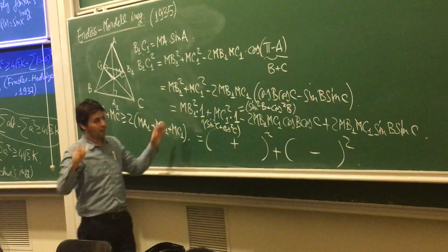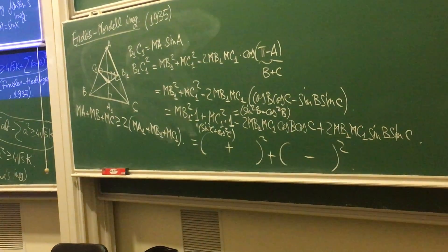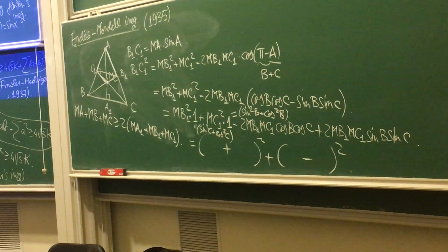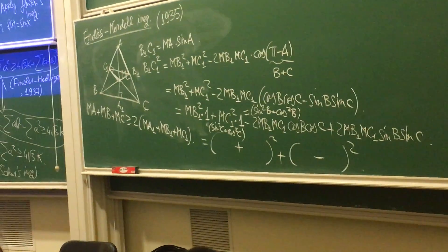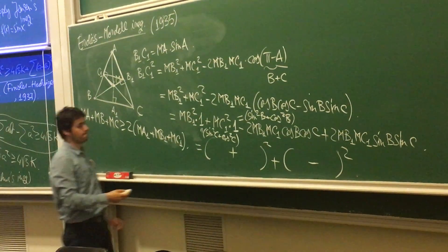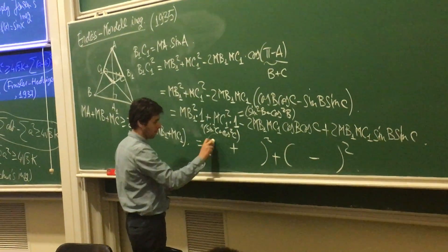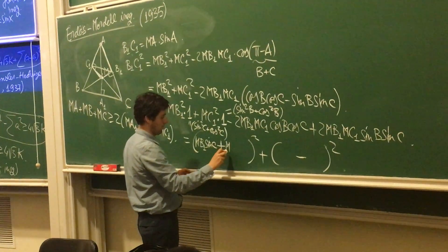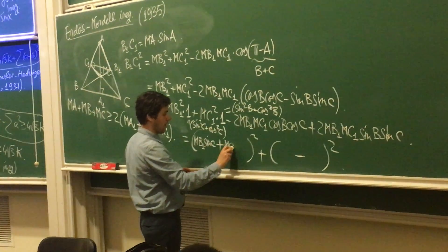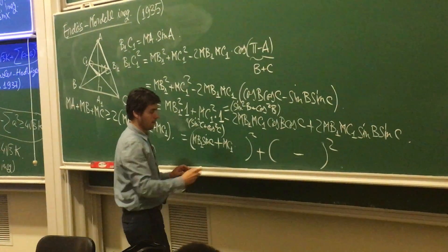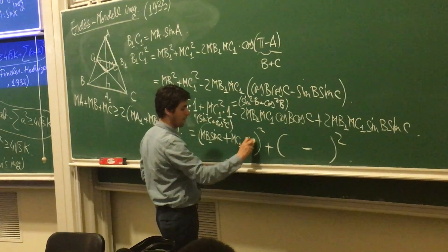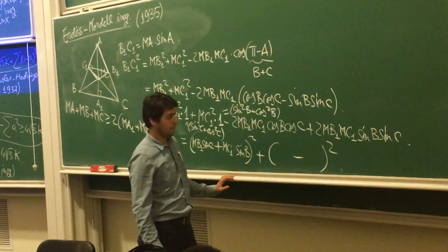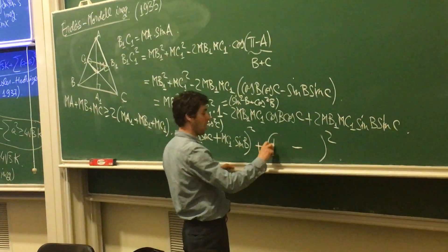And now after we do all this algebra, this will be what? So the first term will be MB1 times sine C, plus MC1 times sine C. And here I'll have what? The cosine, right? So it's MB1...